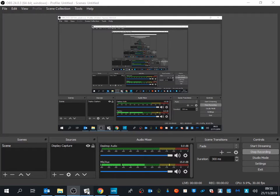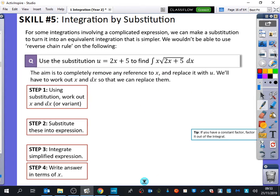So we are moving on to substitution, and I think you're really going to like this area. This is skill number five, integration by substitution. This is where it gets proper now. For some integrations involving a complicated expression, we can make a substitution to turn it into an equivalent integration that is simpler. We wouldn't be able to use the reverse chain rule on the following.